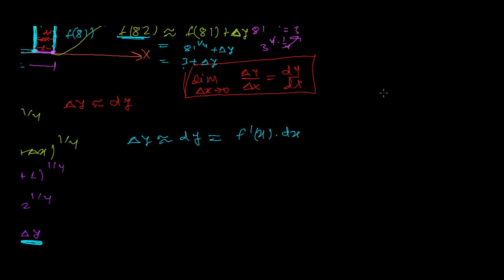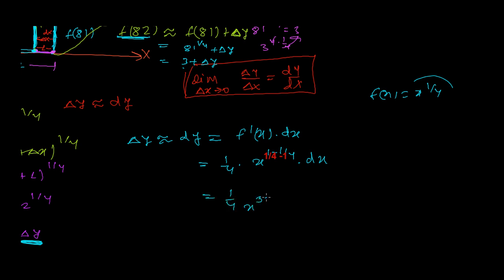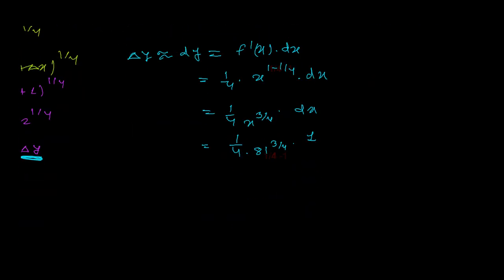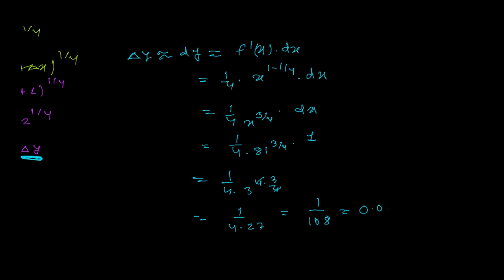Our function is f(x) = x^(1/4), so its derivative is f'(x) = (1/4) · x^(1/4 − 1) = (1/4) · x^(−3/4). Therefore dy = (1/4) · x^(−3/4) · dx. Substituting x = 81 and dx = 1: dy = (1/4) · 81^(−3/4) = (1/4) · (3^4)^(−3/4). The fours cancel leaving 3^(−3), so dy = 1/(4 × 27) = 1/108.